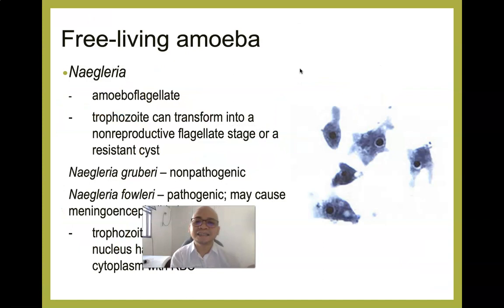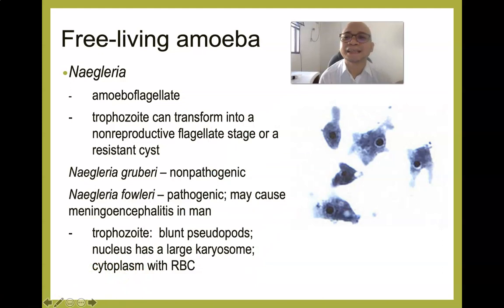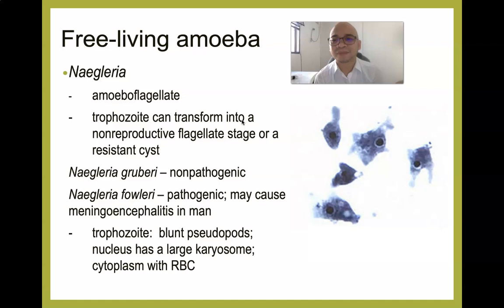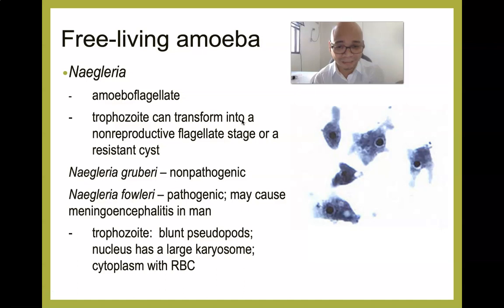Humans are the end host for Acanthamoeba since it naturally resides in the environment without requiring another host to complete its life cycle. One important species is Acanthamoeba culbertsoni. Naegleria is described as an amoeboflagellate — meaning the trophozoite can transform into a non-reproductive flagellate stage or a resistant cyst. Naegleria gruberi is non-pathogenic, but Naegleria fowleri causes Primary Amoebic Meningoencephalitis (PAM) in humans.